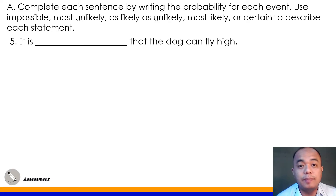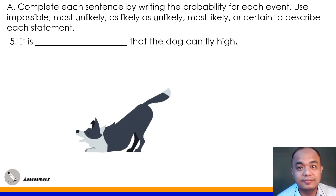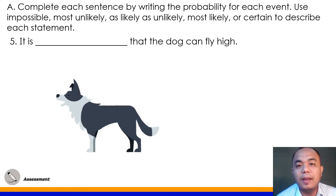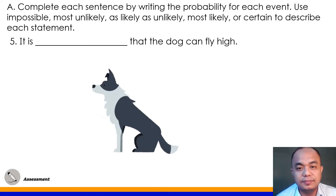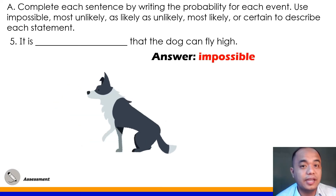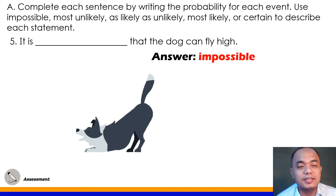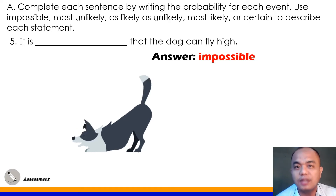Number 5: It is blank that the dog can fly high. Of course, that would be impossible. So the answer for number 5 is impossible.